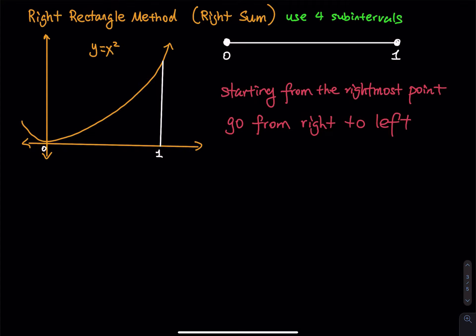In this video I would like to use the right rectangle method, also called the right sum, to approximate the area under the curve of x squared where x goes from 0 to 1 using 4 subintervals. You can use 6, 8, 10, or even 50 intervals, but in this video I prefer to use 4 subintervals.